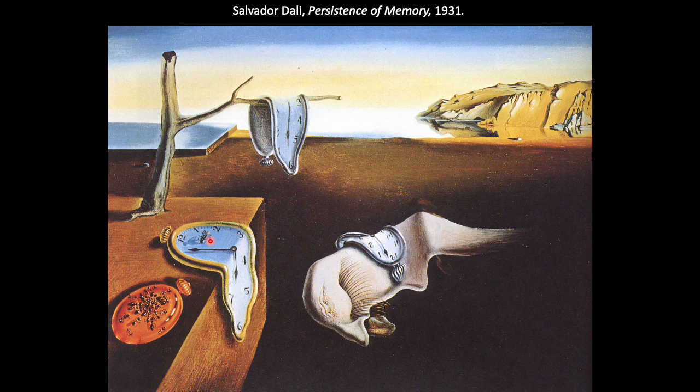The strangely melted fleshy form to the right is both alien and familiar — it's actually an approximation of a human face, generally thought to be a self-portrait of Dalí, with sort of long eyelashes, a nose, and even a little curled mustache. Dalí proclaimed that he didn't know the meaning of the work and refused to associate the clocks or any other elements with anything specific, claiming he'd been inspired to paint it after playing with some melted cheese. He described the work as 'nothing more than the soft, extravagant, solitary, paranoiac-critical camembert of time and space.'